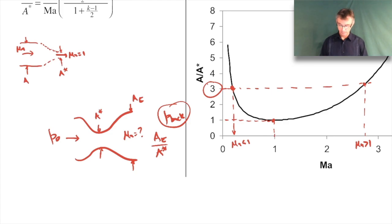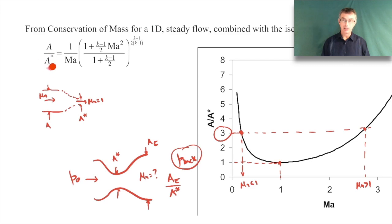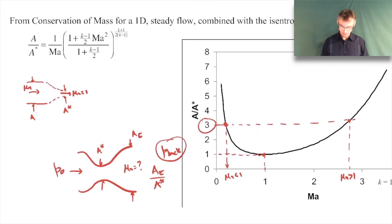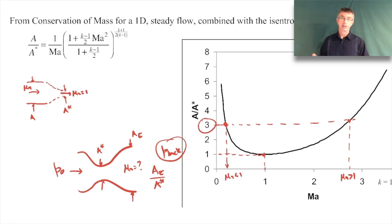We'll get to that in a later lecture. For now, just be aware that if you're given the area at a particular Mach number, we can determine what that minimum area A* needs to be to reach M = 1. The A/A* equation is straightforward if you're given Mach number (just plug in and compute), but working in reverse - given A/A* and finding Mach number - requires a root-finding method, which can be tedious on a simple calculator.